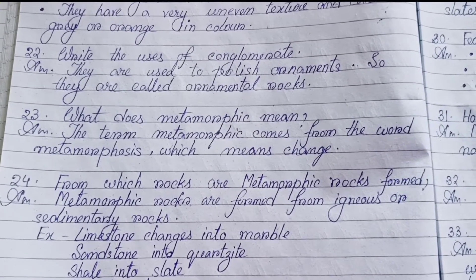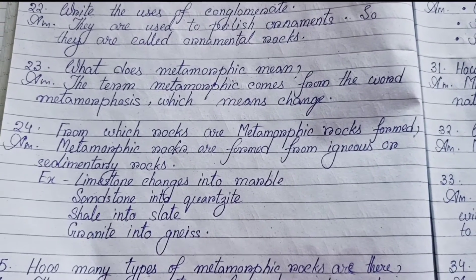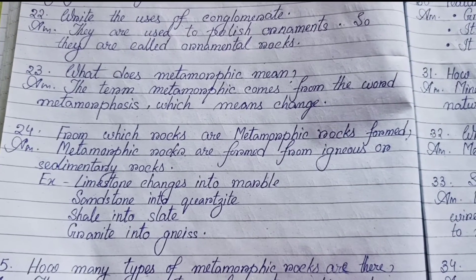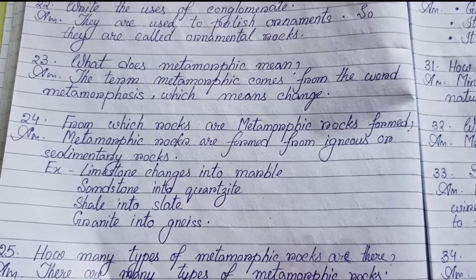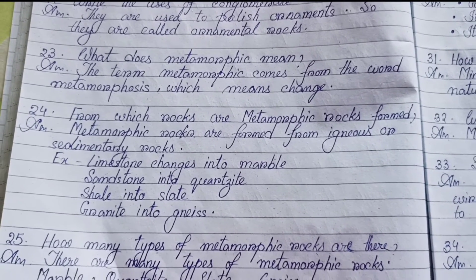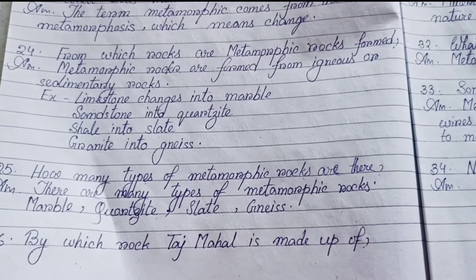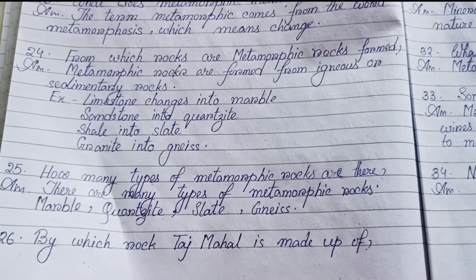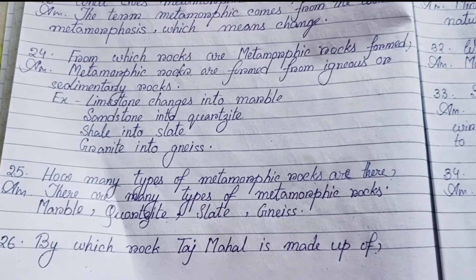Number twenty-three: What does metamorphic mean? The term metamorphic comes from the word 'metamorphosis', which means change. Number twenty-four: From which rocks are metamorphic rocks formed? Metamorphic rocks are formed from igneous or sedimentary rocks. Examples: Limestone changes into Marble, Sandstone into Quartzite, Shale into Slate, Granite into Gneiss. Number twenty-five: Types of metamorphic rocks — Marble, Quartzite, Slate.